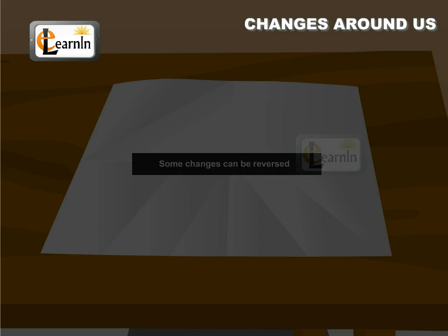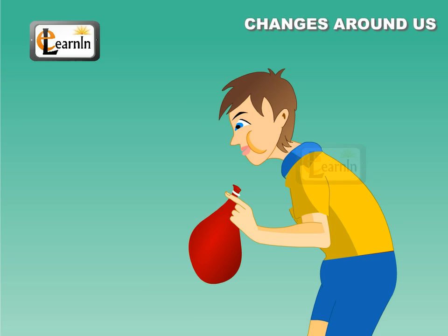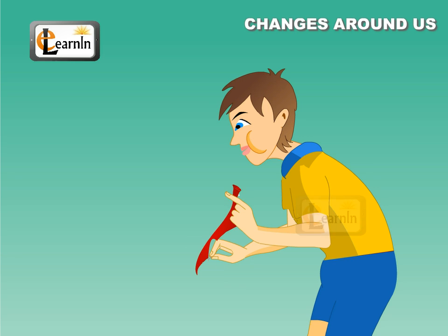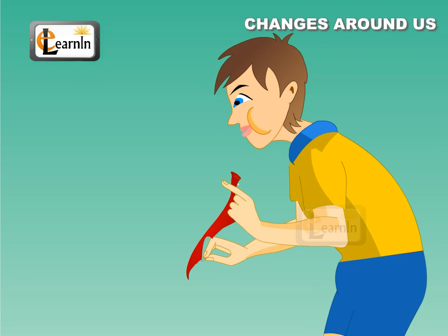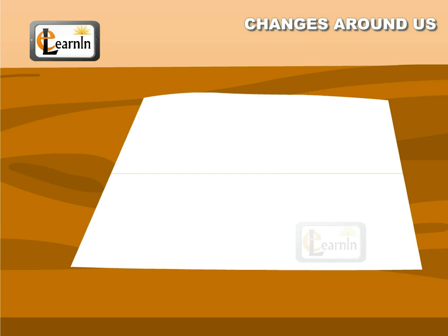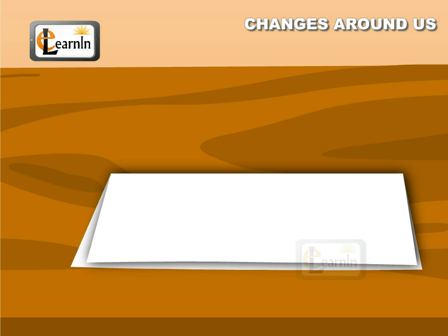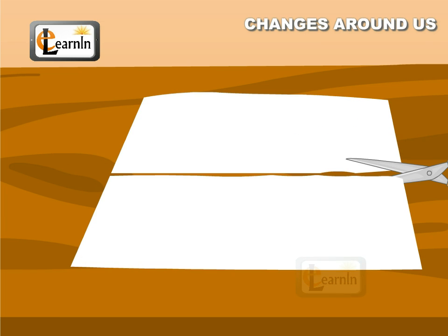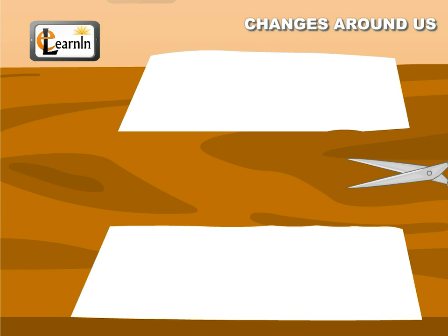Let us perform the same experiments again. For the balloon, instead of letting the air escape, prick it with a pin and burst it — the balloon loses its previous shape. Instead of folding the paper into a plane, cut it into desired shapes. The structural change in the paper cannot be reversed.